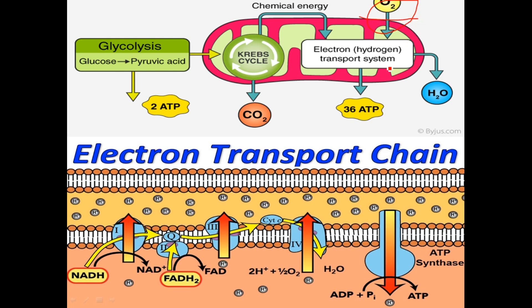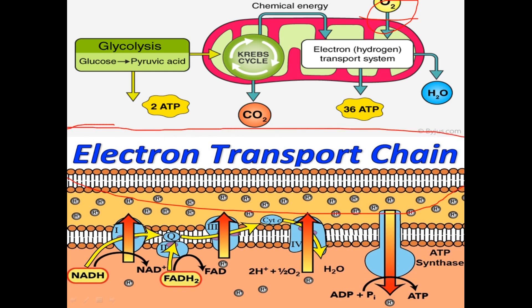Oxygen is so important because it is the final acceptor of electrons in the electron transport system. In the electron transport system, oxygen accepts the final electrons, leading to the formation of metabolic water. In this process, ATP is regenerated. So oxygen is the main ingredient for ATP production.